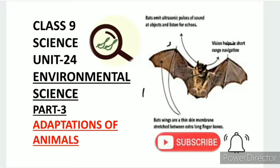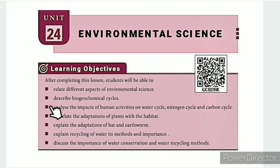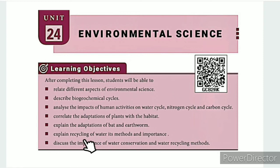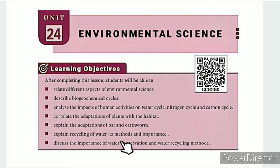Greetings from SS Class 9 Science Unit 24, Environmental Science Part 3: Adaptations of Animals. The learning objectives are: relate different aspects of environmental science, describe bio-geochemical cycles, analyse the impacts of human activities on water cycle, nitrogen cycle and carbon cycle, correlate the adaptations of plants with the habitat, explain the adaptations of bat and earthworm, and explain recycling of water, its methods and importance.